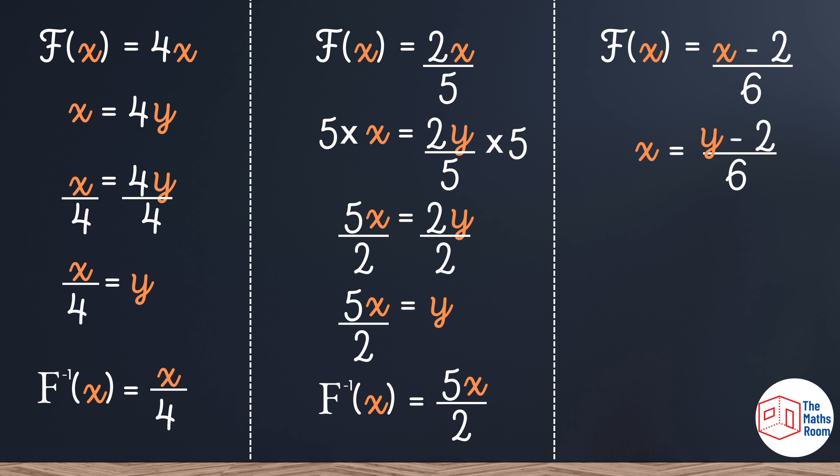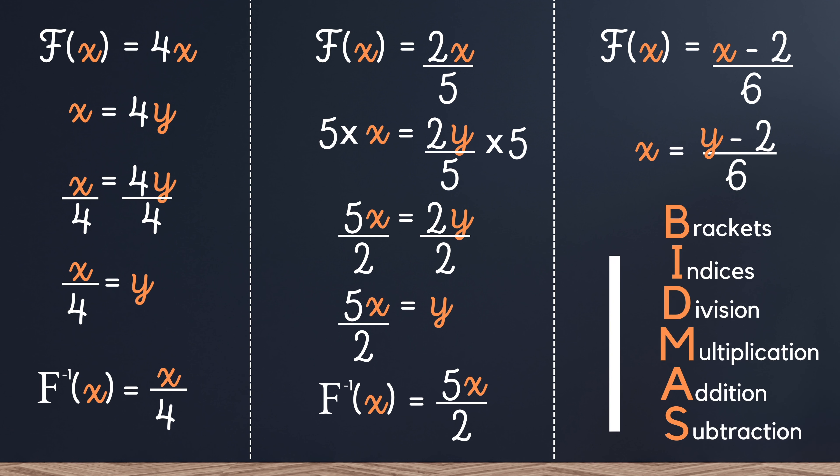So according to my bid maths that would be one of the first one that you would do if you were working in the standard direction. But now we're trying to undo everything we would work from the bottom up which means that division would come first. So to get rid of that division I'm going to multiply both sides by 6.